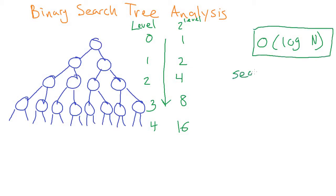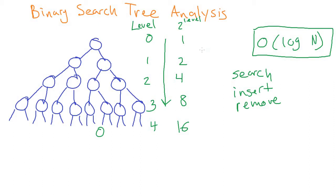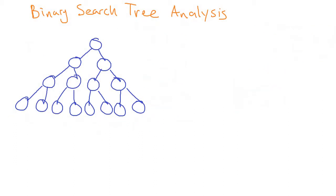This applies not just to the searching algorithm, but also to the insert algorithm, because the way insert works is you search for where the item is going to go and then put it in place. The putting it in place just takes a constant amount of time — it's the searching that has the loop. That's also true for the remove algorithm: you just search for the node to remove, and then the swap is basically a constant amount of time. So in this best case scenario where the tree looks really good, we have O(log N) time for search, insert, and remove.